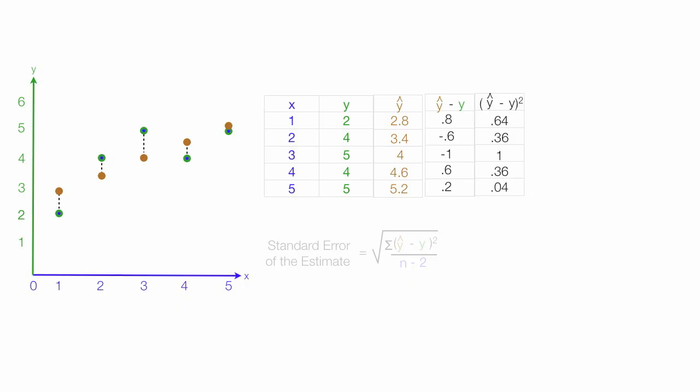And now I'm going to add up this entire column. And this adds up to 2.4. So I put that down in my equation. That's the numerator. Divided by n minus 2.